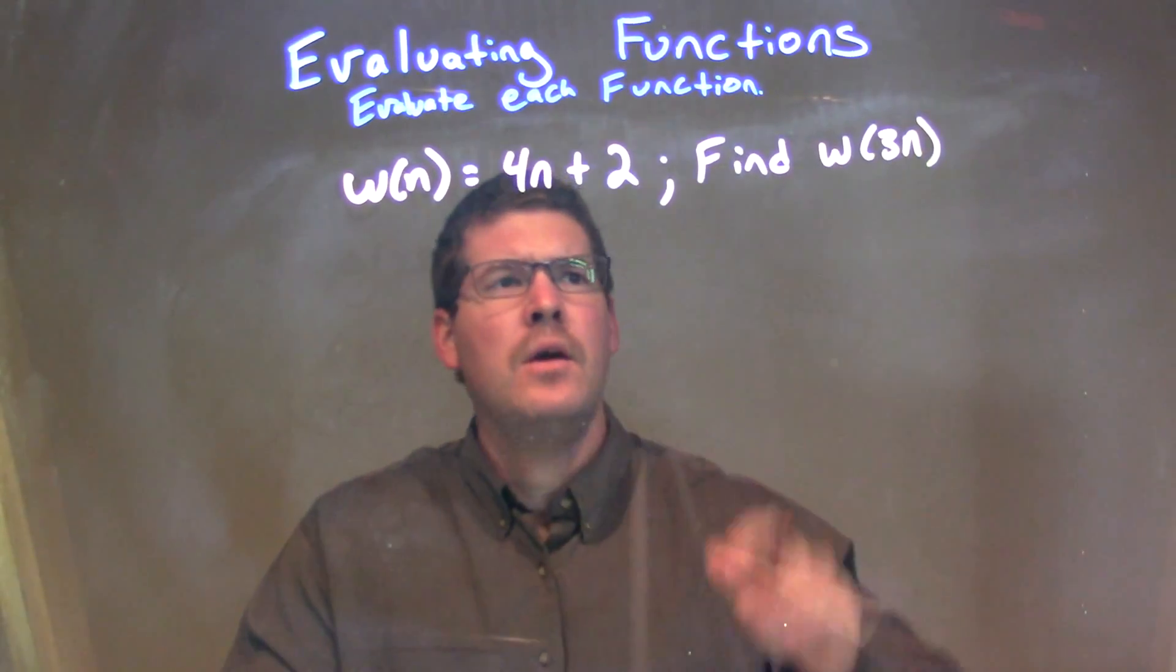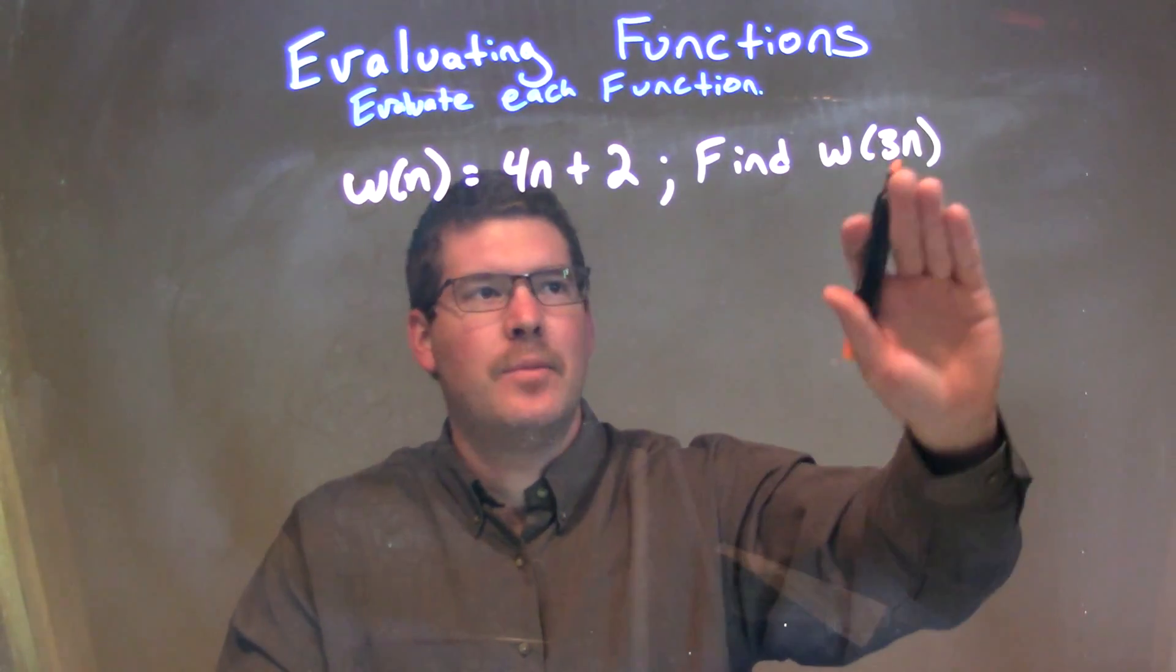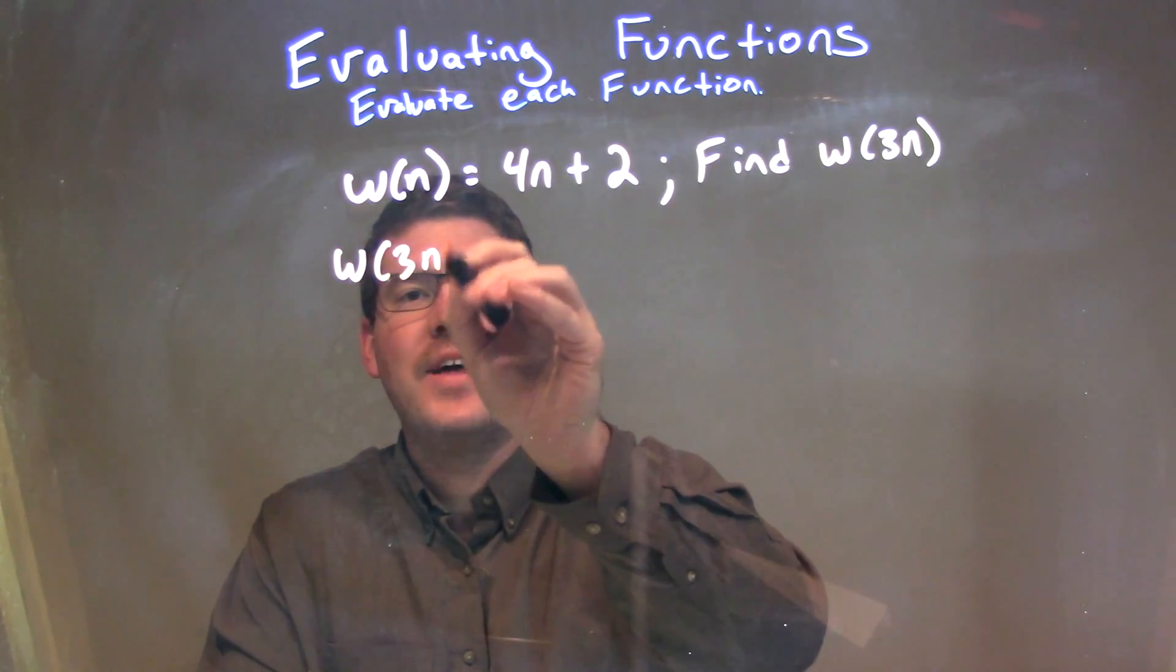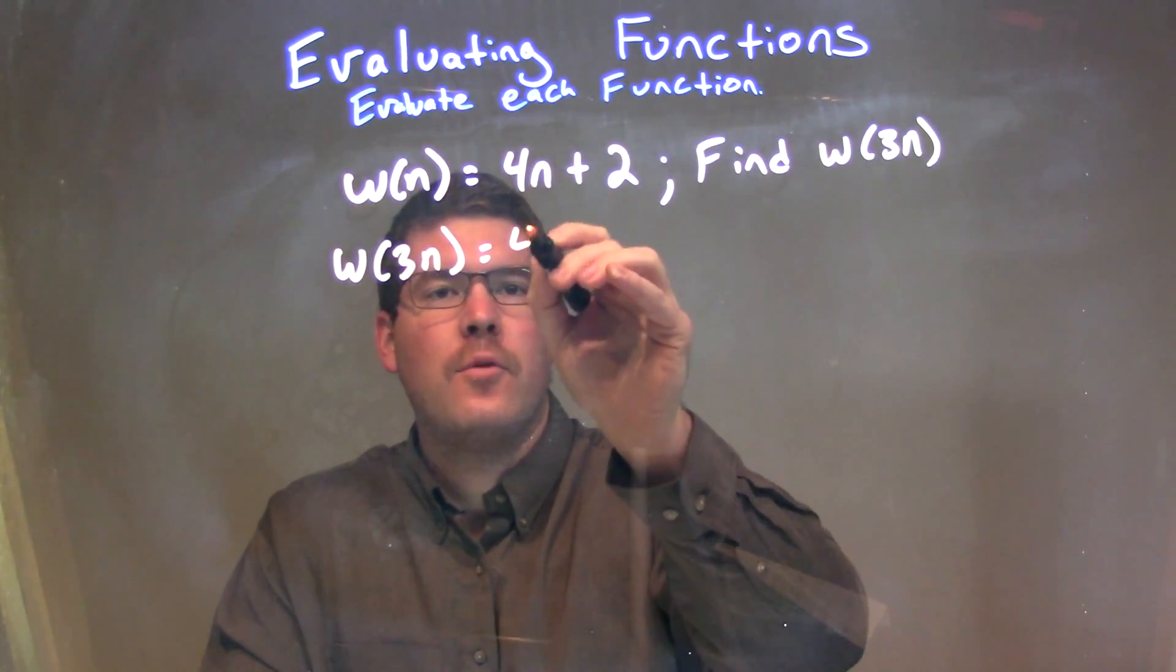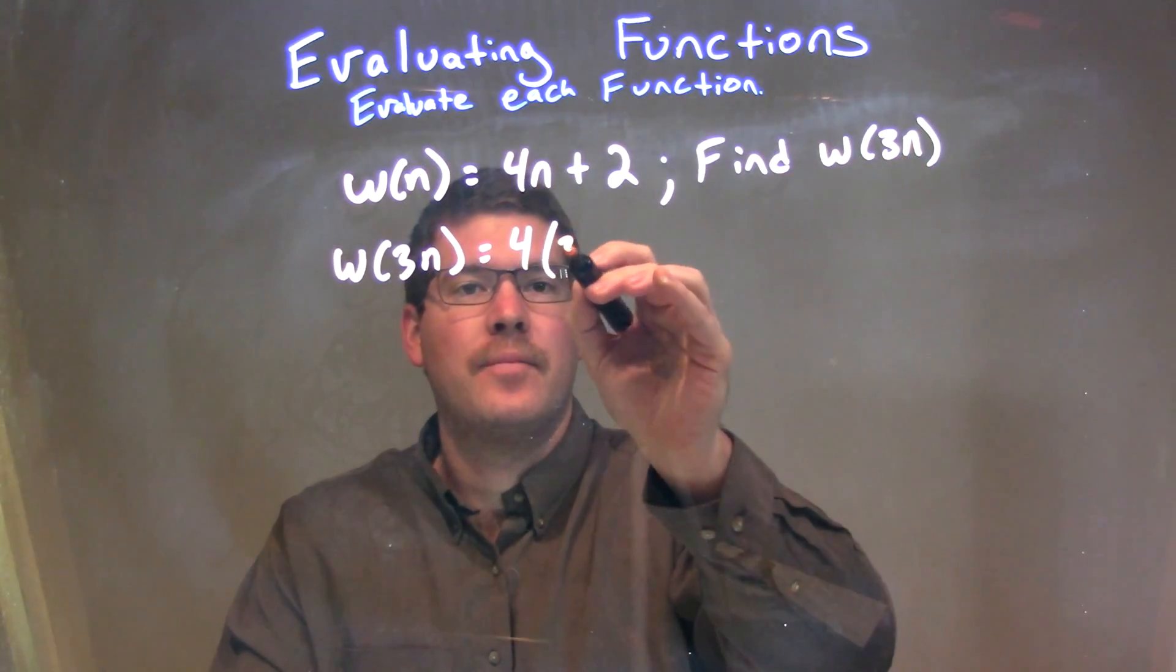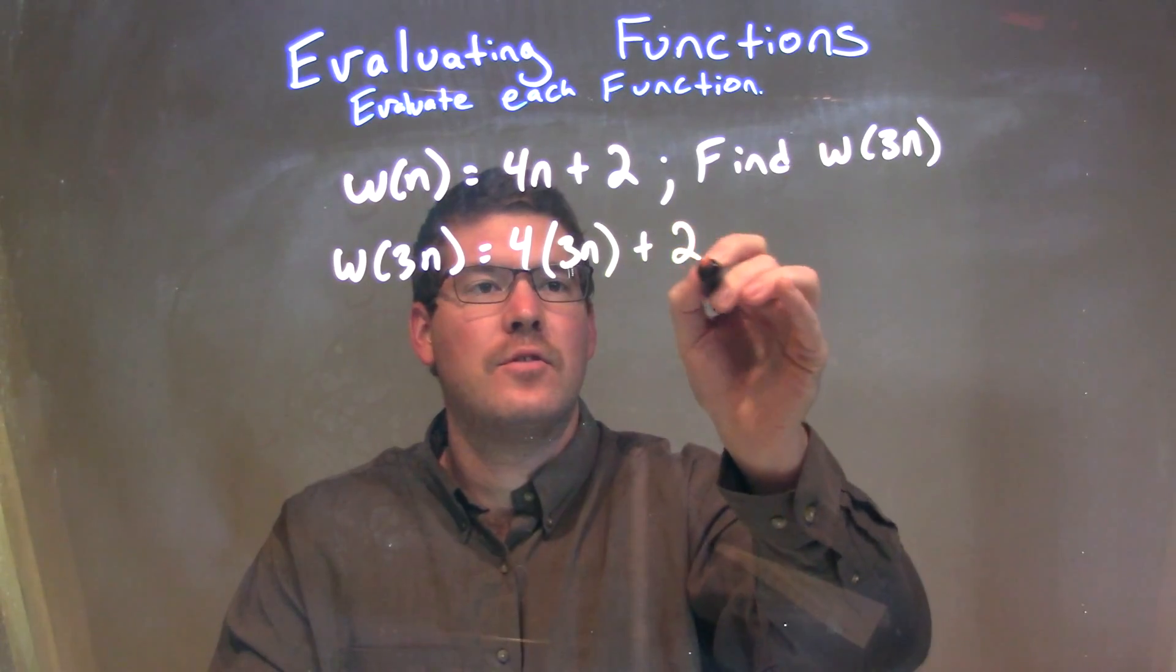Well, every single time I see an n, I need to plug in a 3n, so when I find w(3n), that is what I'm doing. So, I have 4, now times, be careful, for the n, I'm plugging in a 3n, 3n plus 2.